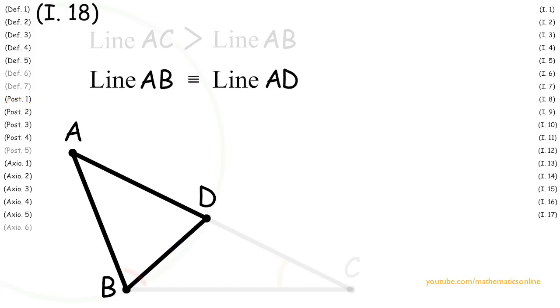Now, since triangle ABD has two sides that are congruent, then by Proposition 5, angle ABD is congruent to angle ADB.